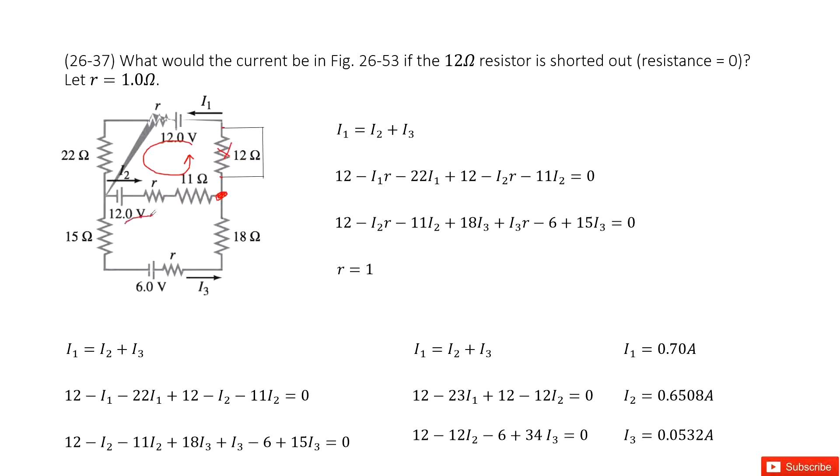And the second loop we can look at there. Initially we have a battery: 12 volts. The current I2 goes through internal resistor R, making the voltage decrease. So minus I2 times R, minus I2 times 11. And there, we can see the current goes through 18 ohms. It is actually up, but our loop is pointing down, so opposite direction. This makes the voltage increase. So this is plus 18I3 plus I3 times R. The battery's direction is opposite with the loop, so we will minus 6, and then plus 15I3. Still the loop's direction is opposite with the current direction.